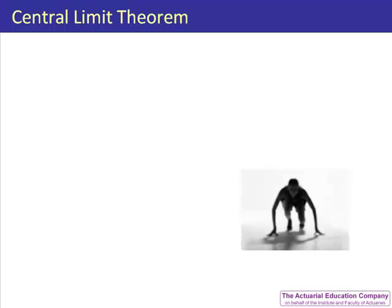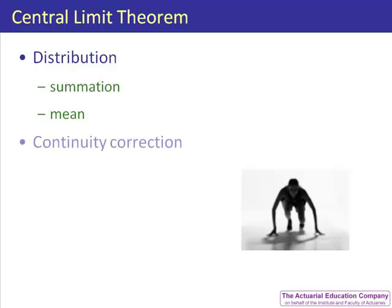In this unit, we will introduce the central limit theorem, which gives the distribution for a sum of random variables and the sample mean of some random variables. We will also look at how to deal with the transition from a discrete distribution to a continuous distribution by applying a continuity correction.